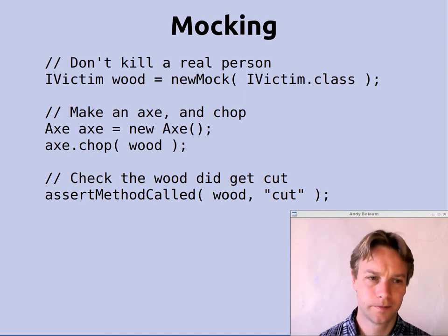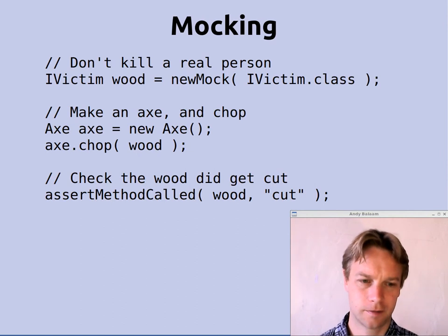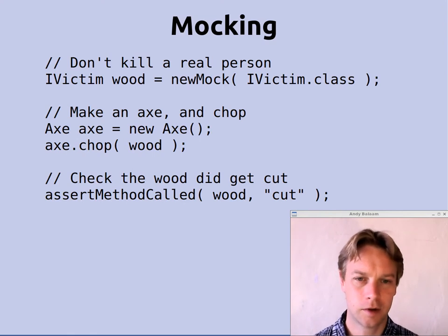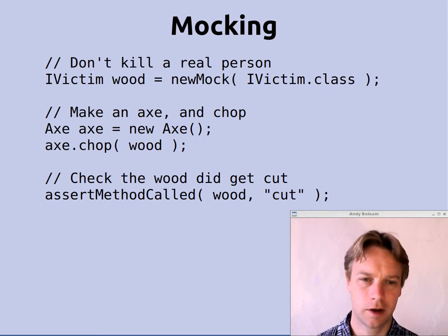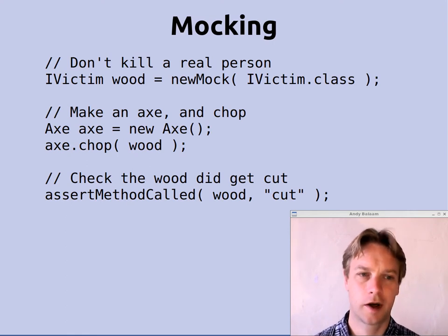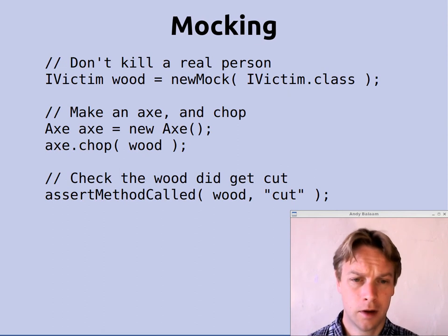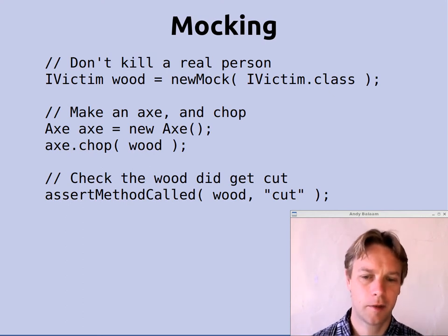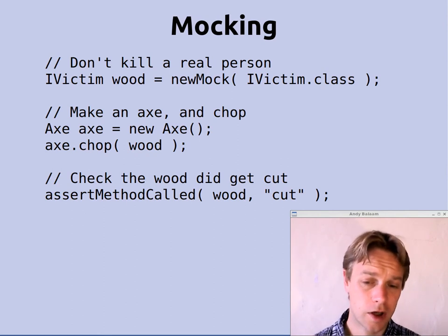Here's a bit of example code. Imagine we want to test the Axe class, which has a chop method. Instead of making an actual person and chopping their head off every time we're testing the code, let's make an IVictim — which is what the chop method takes — but let's just make a block of wood, which is a mock object. The way we do that is we call this method called newMock, we pass it the interface we want it to be a mock of, and it gives us back an instance of IVictim. We don't have to define a concrete class that implements IVictim, which might have a lot of methods.